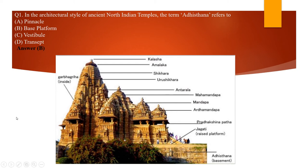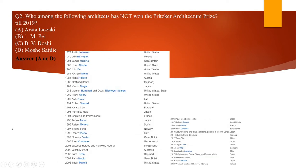The first question: in the architectural style of North Indian temples, the term 'Adishtan' refers to — basically, Adishtan refers to the base platform. As you can see from the diagram, this is the base platform known as Adishtan. Pinnacle is the topmost part in a mosque, whereas in temples the topmost part is known as Kalasha. Vestibule is your mandapa or ardha-mandapa. Transept and vestibules are parts of churches, while pinnacle is part of a mosque — so even if you didn't know the answer, you could eliminate the options.